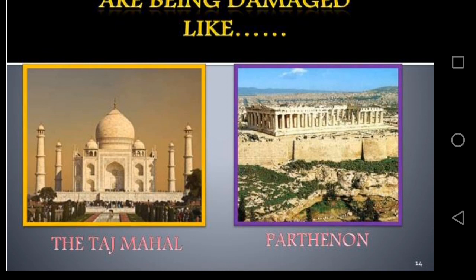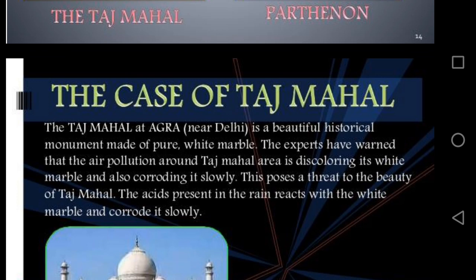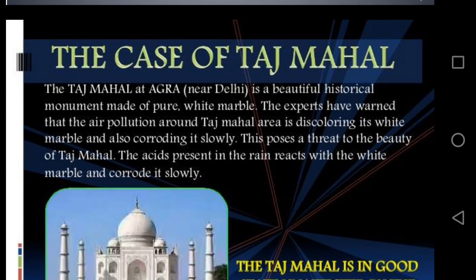As you can see in the figure, acid deposition also corrodes statues and monuments made from marble. The Taj Mahal is a very beautiful monument made from pure white marble, situated at Agra. Acid rain affects our Taj Mahal. Experts have warned that air pollution around the Taj Mahal area is discoloring its white color and corroding it slowly, posing a threat to its beauty.